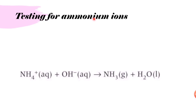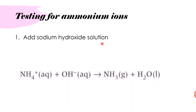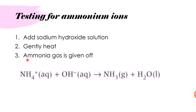The test for ammonium ions is similar: add sodium hydroxide solution to the sample, then heat gently. If ammonium ions are present, ammonia gas is given off — the same positive result as the nitrate ion test, but without Devarda's alloy. The equation shows the ammonium ion reacting with hydroxide ions donated from sodium hydroxide to form ammonia gas and water.